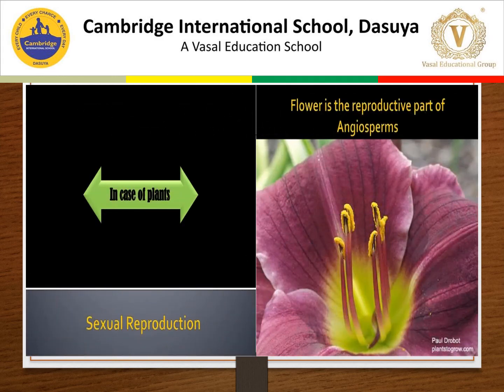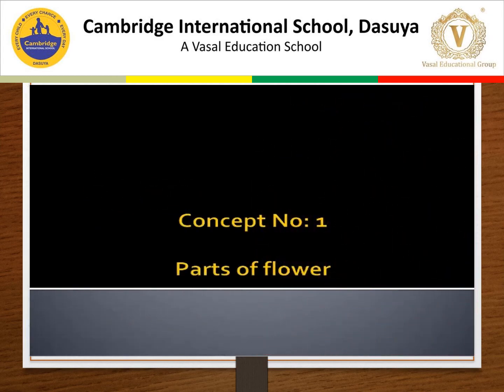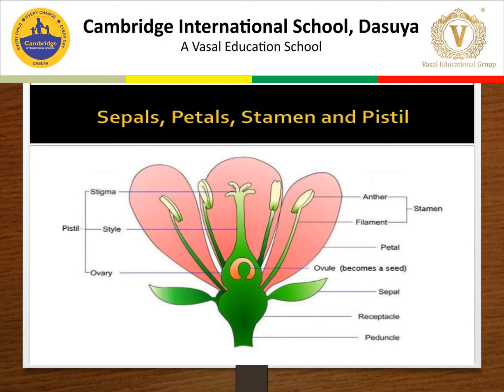Now we will discuss sexual reproduction in plants. The reproductive part of a plant is the flower. Here you can see the structure of the flower — the flower is borne at the tip of a stalk called the pedicel. The pedicel expands into a fleshy swollen upper portion called the thalamus or receptacle, and all flower parts are attached to the thalamus.